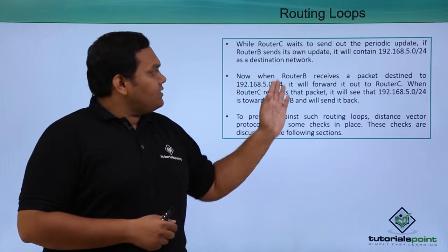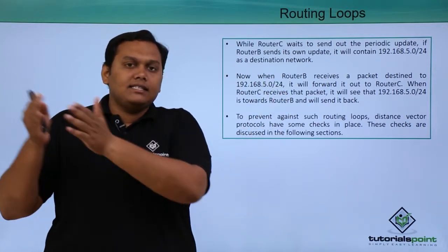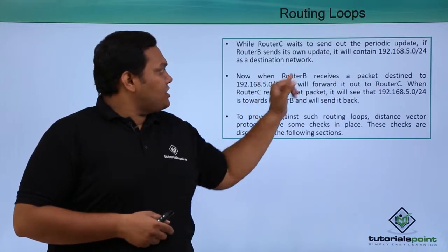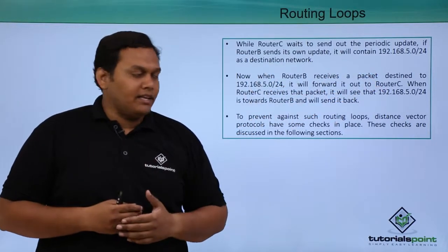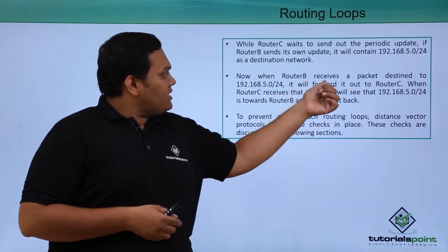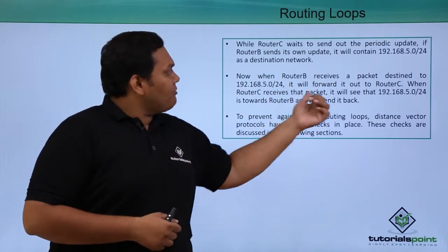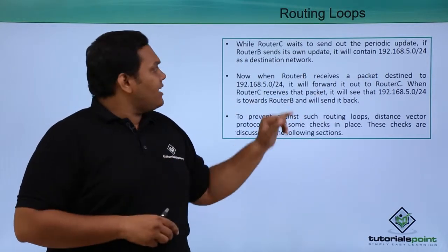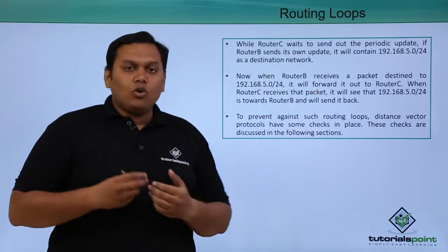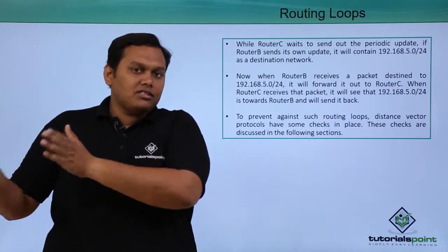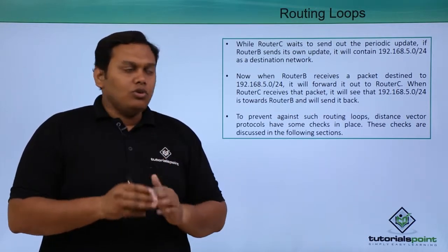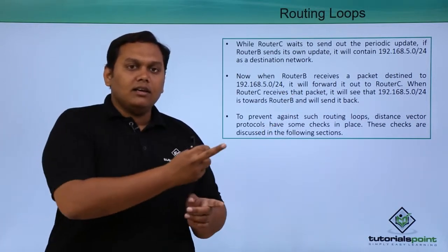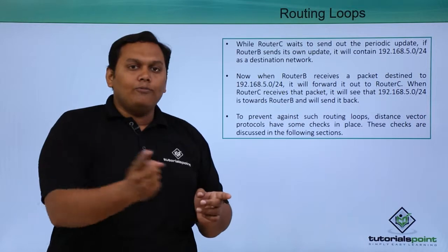If router B sends its own update stating it has a destination network of 5.0/24, router B will forward packets destined to 5.0 back to router C. Router C will think that router B has a distinct route and will send the packet back to router B. This is how the loop forms.